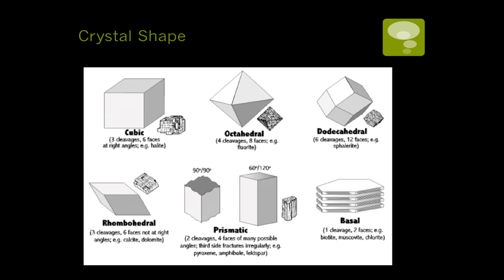Crystal shape is the underlying reason all of the other properties exist. The stronger the crystal is formed and the stronger the atomic properties of the mineral, the harder it is — and all the other properties it shows are based on this. Here are six examples of different types of crystal shape.